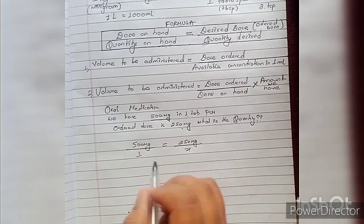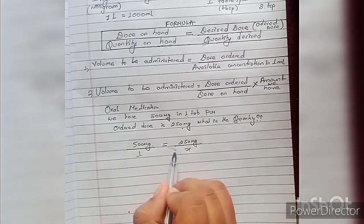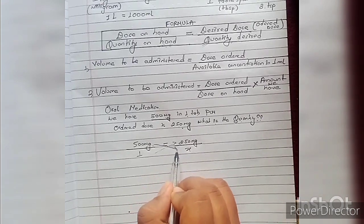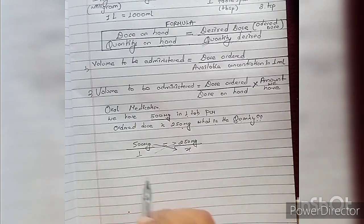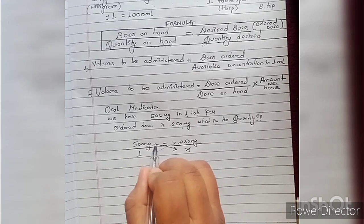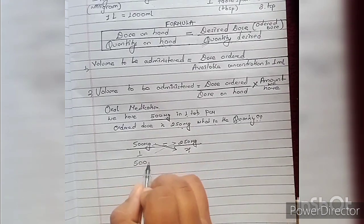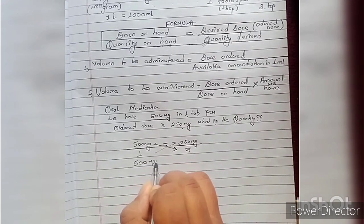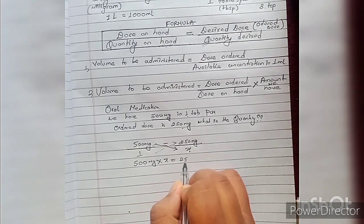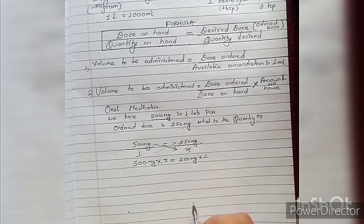Let's suppose the quantity to be given is x. We will cross multiply: 500 mg × x equals 250 mg × 1.